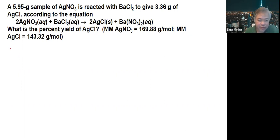So we can start with the given 5.95 grams. Okay, so what we're going to do is we convert these to moles. So for every one mole of silver nitrate, that is equivalent to 169.88 grams of silver nitrate.